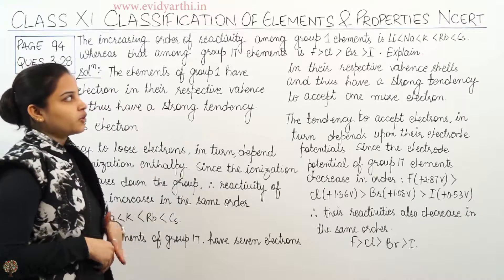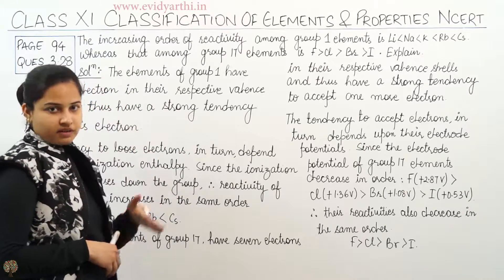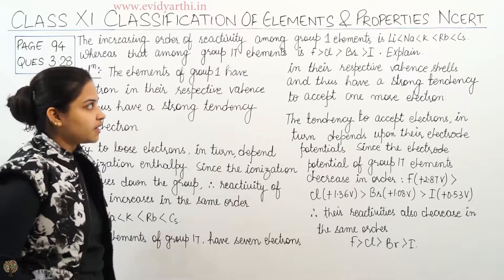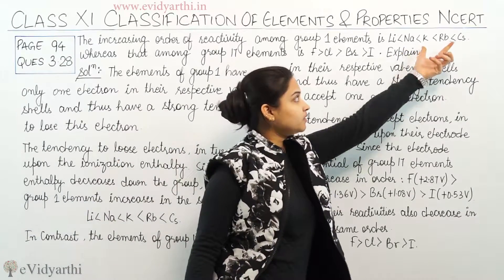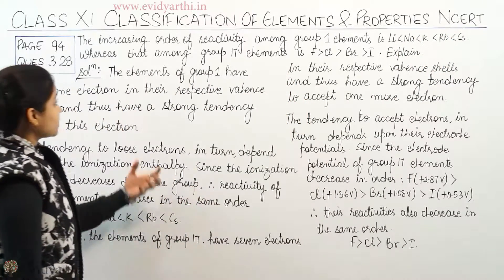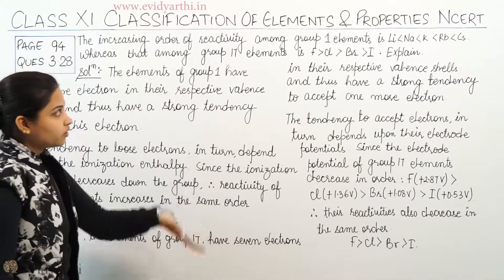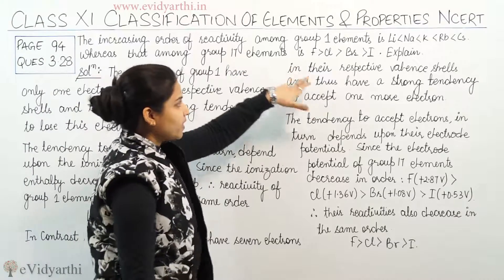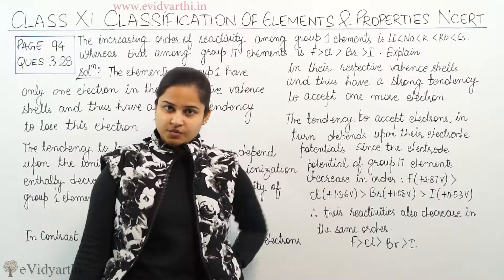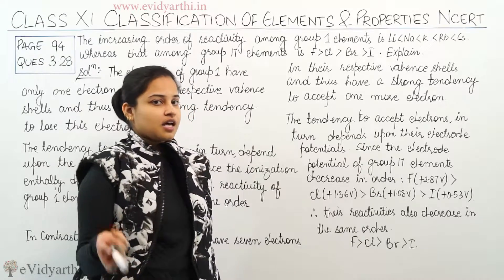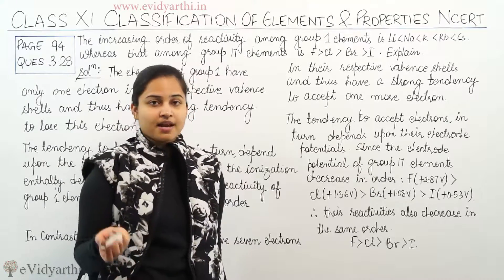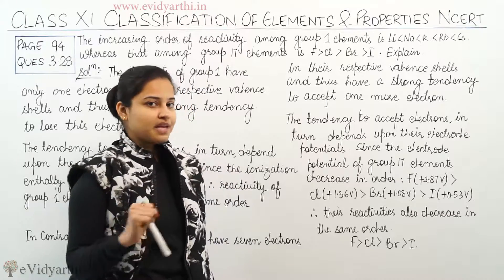When we are moving down the group in Group 1 elements, we are seeing a certain order of reactivity. Whereas when we are moving down the group in Group 17 elements, we are seeing a different order of reactivity. So why is there opposite reactivity in Group 1 as well as in Group 17? We need to explain this.